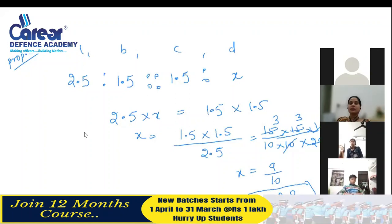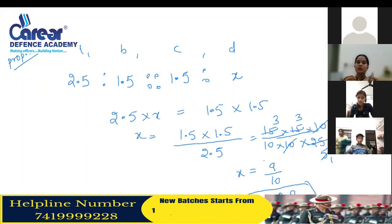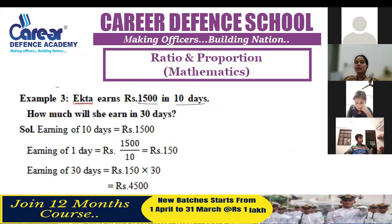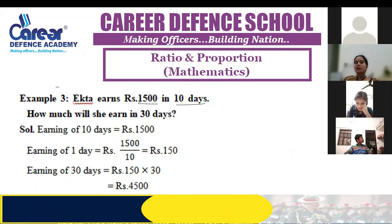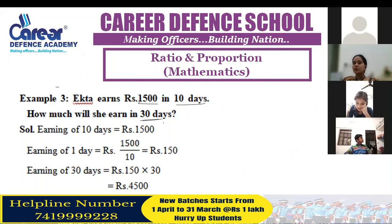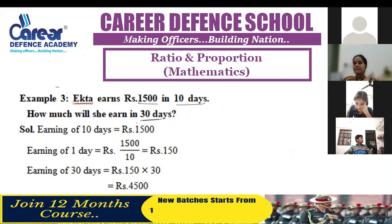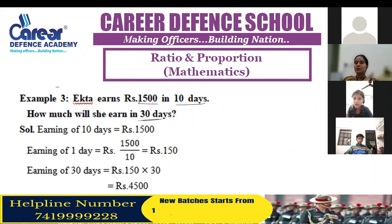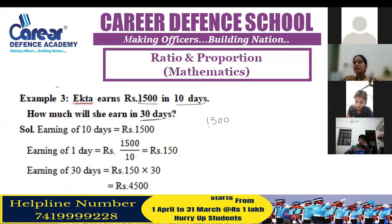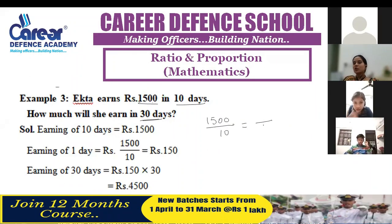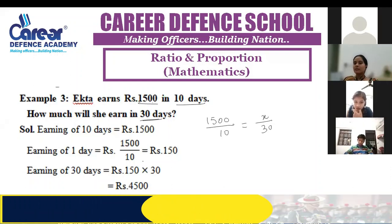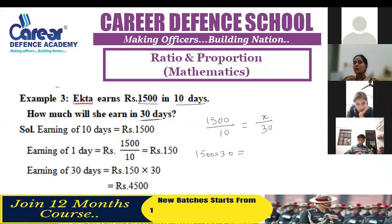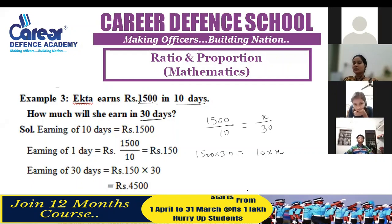Third proportional done. Now — Ekta earns fifteen hundred rupees in ten days. If she earns fifteen hundred in ten days, how much will she earn in fifty days? How will we do this with ratio? Fifteen hundred is earned in ten days; how much in fifty days? A proportion will be formed: 1500 into 30 equals 10 into x. From here you can find the value of x.